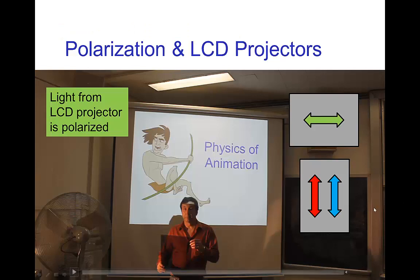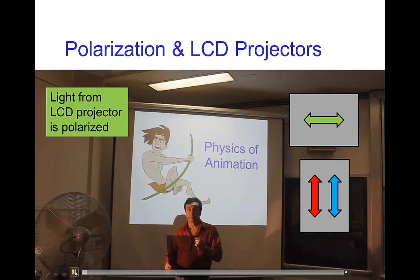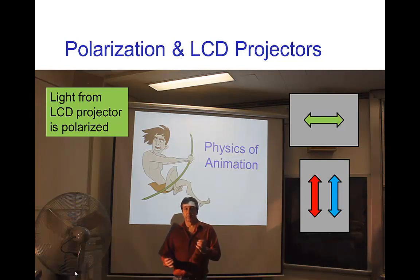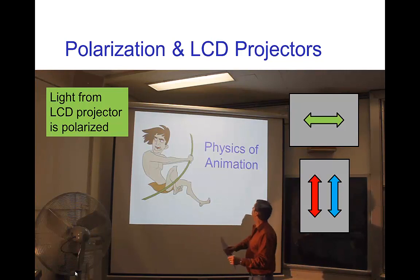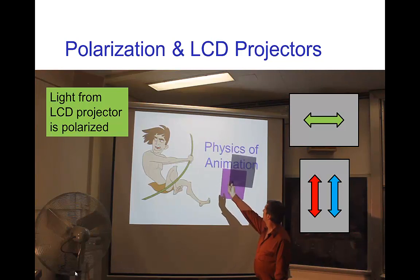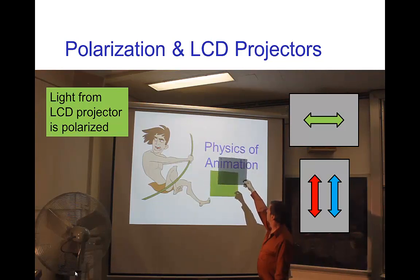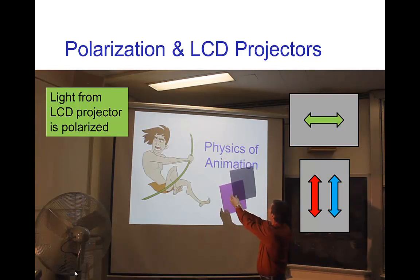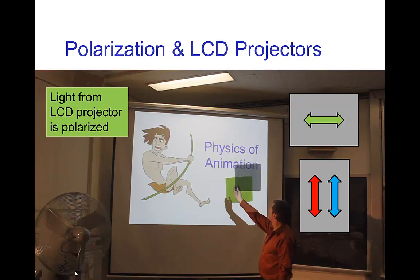The LEDs in a liquid crystal display projector are also polarized. Here you can see I'm holding just one of the filters in front of the light — the shadow is green, then magenta (red and blue), then green again. So the light passing through the green liquid crystals is horizontally polarized, and the light passing through the red and blue pixels is vertically polarized.